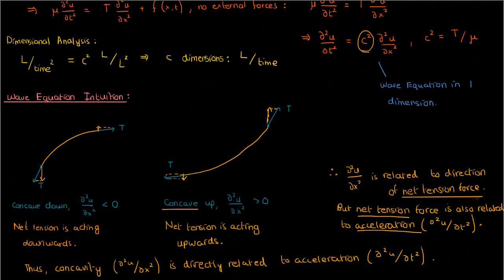For other phenomena, like electromagnetic waves, the intuition is a bit more difficult to grasp, because the concepts are a bit more advanced. In any case, that concludes the lecture. We've successfully derived the wave equation for a string and given an idea of the intuition behind it. In the next video, I'm going to derive the general solution of the wave equation.